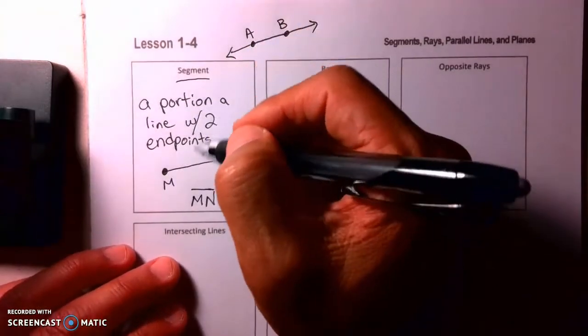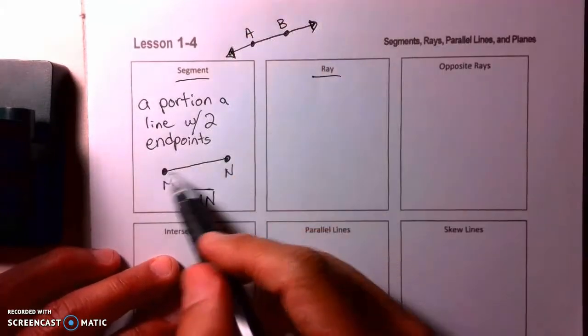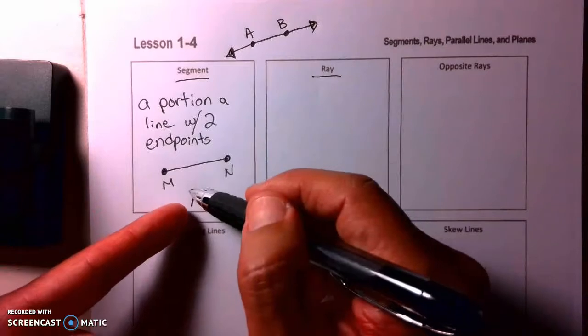Now one of the problems with segments - the book, after a while, starts to just mention they'll just call this a line, or they just might call this a segment. But technically a segment has two endpoints.